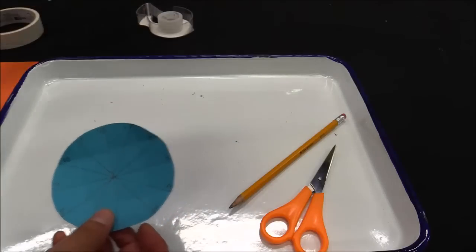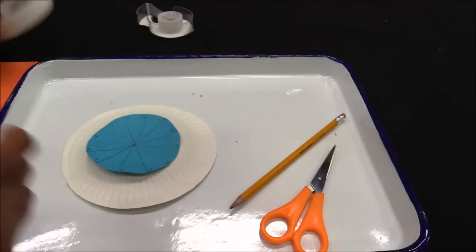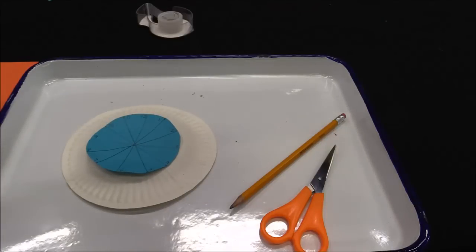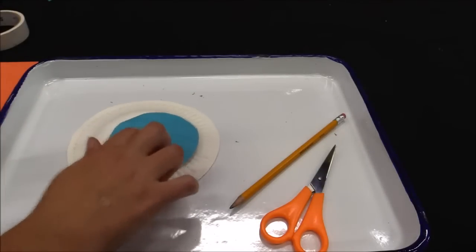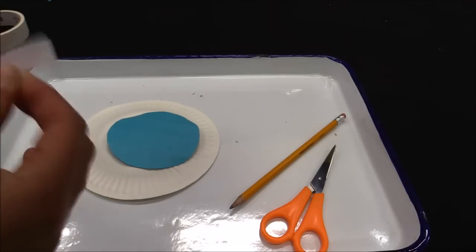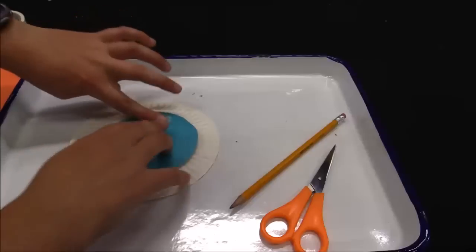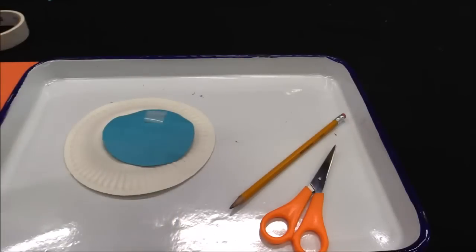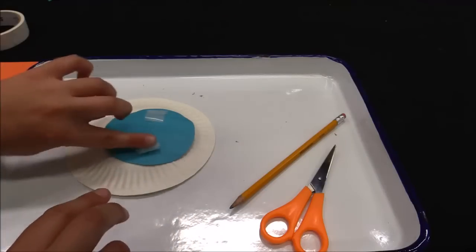Now what you're going to do is you're going to grab your paper plate and you are going to tape your sundial circle to your paper plate. Now one thing you want to be careful of is we don't want to put tape in the center because you're actually going to need to put a hole there in just a second. So we're going to put tape up here and we're going to put tape down here.